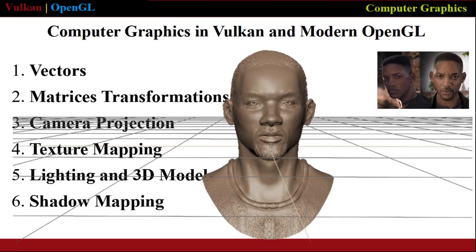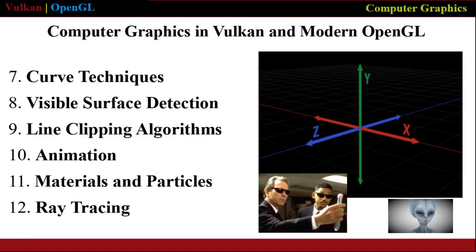In this complete course, we'll first talk about vectors, matrices transformations, camera projection, we will talk about adding shadow and lighting techniques to 3D models, then transition over into visible surface detection algorithms using animations, and then finally ray tracing.